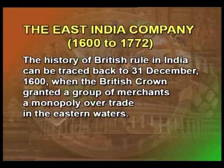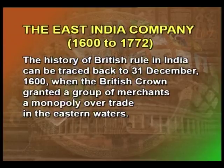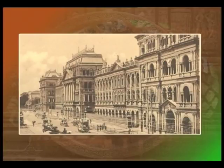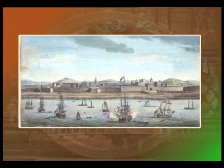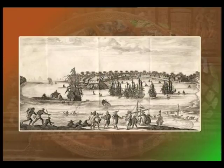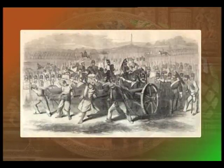The East India Company, 1600 to 1772. The history of British rule in India can be traced back to 31st December 1600, when the British Crown granted a group of merchants a monopoly over trade in the eastern waters. The East India Company, as it was called, was a body comprising of merchant adventurers. Its primary objective was the purchase of Indian goods and then selling them in Europe. They arrived on the shores of Bengal strictly as peddlers of their wares but eventually stayed on to rule.